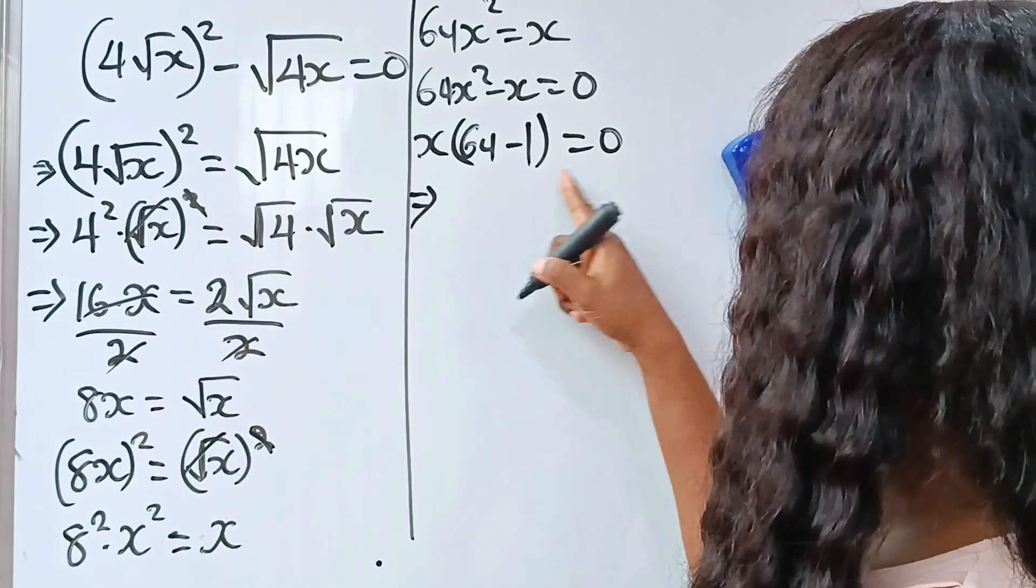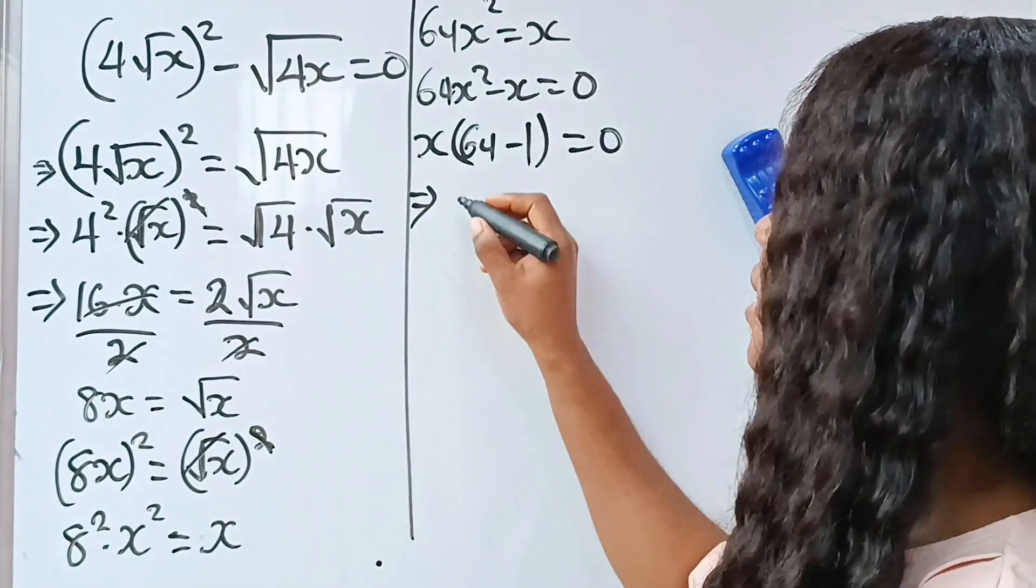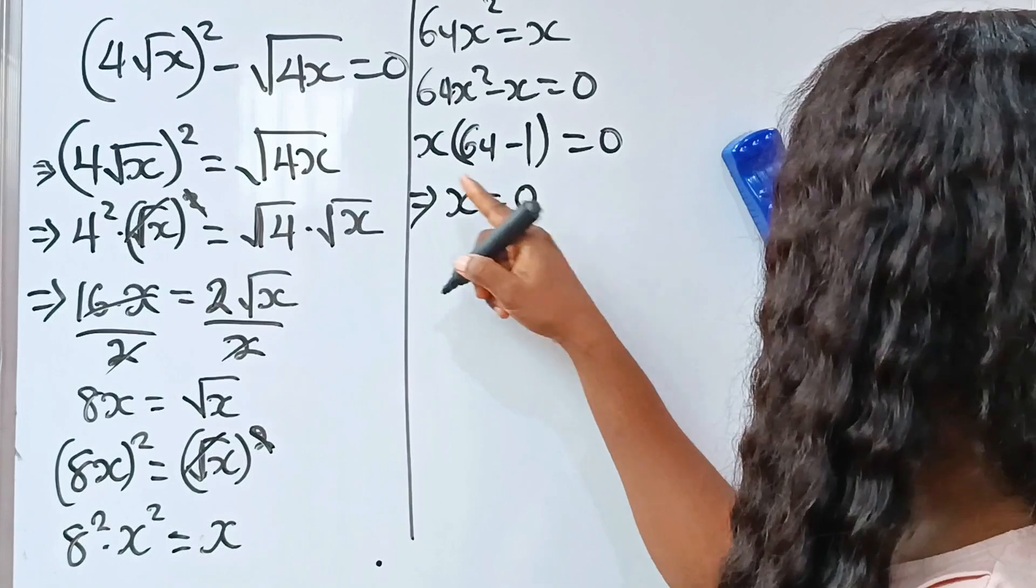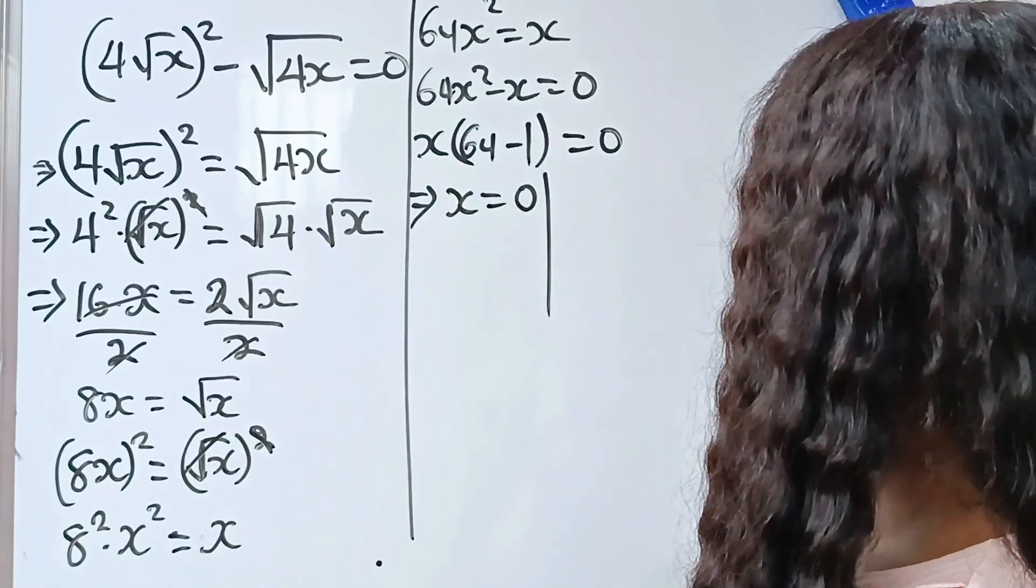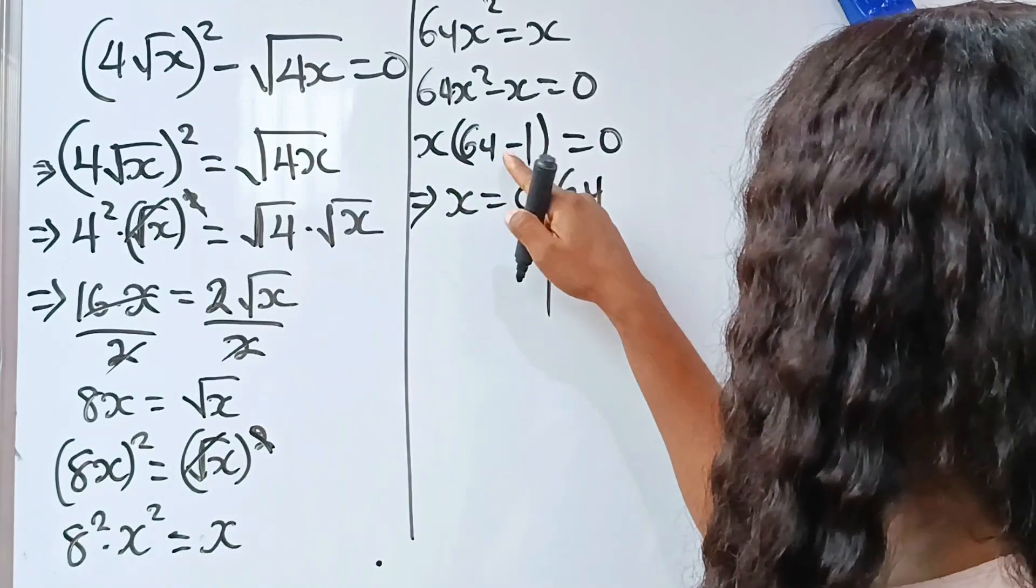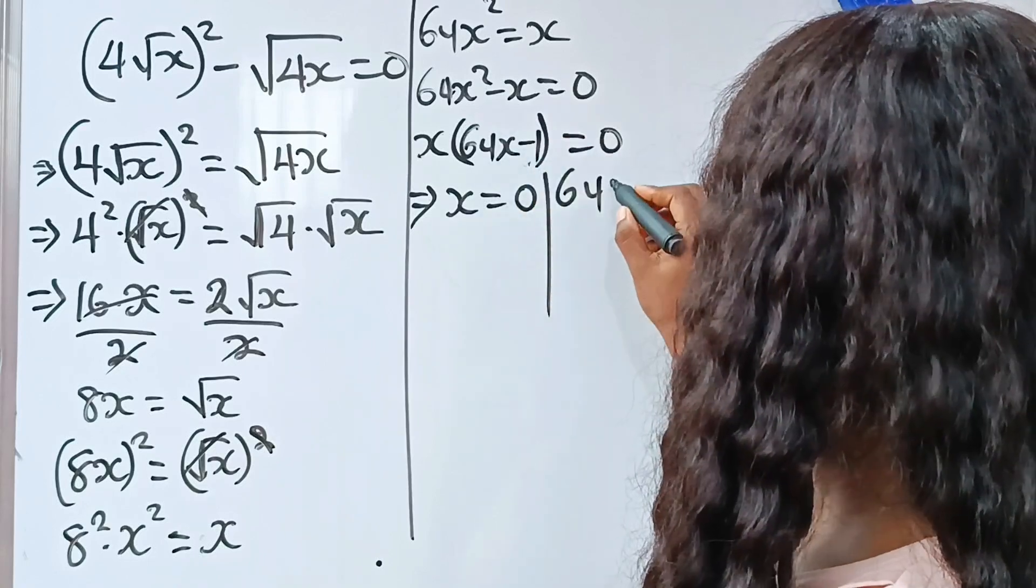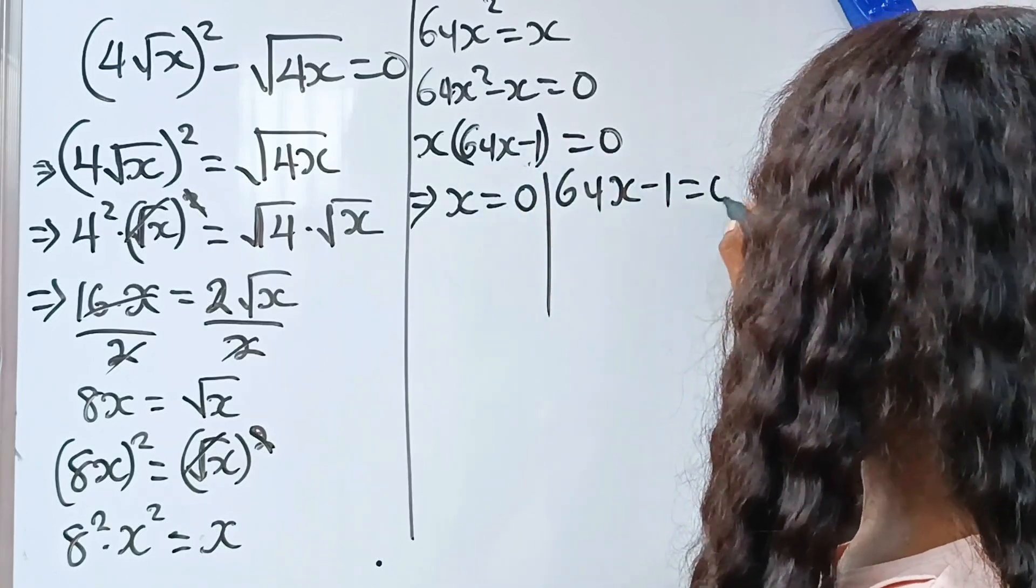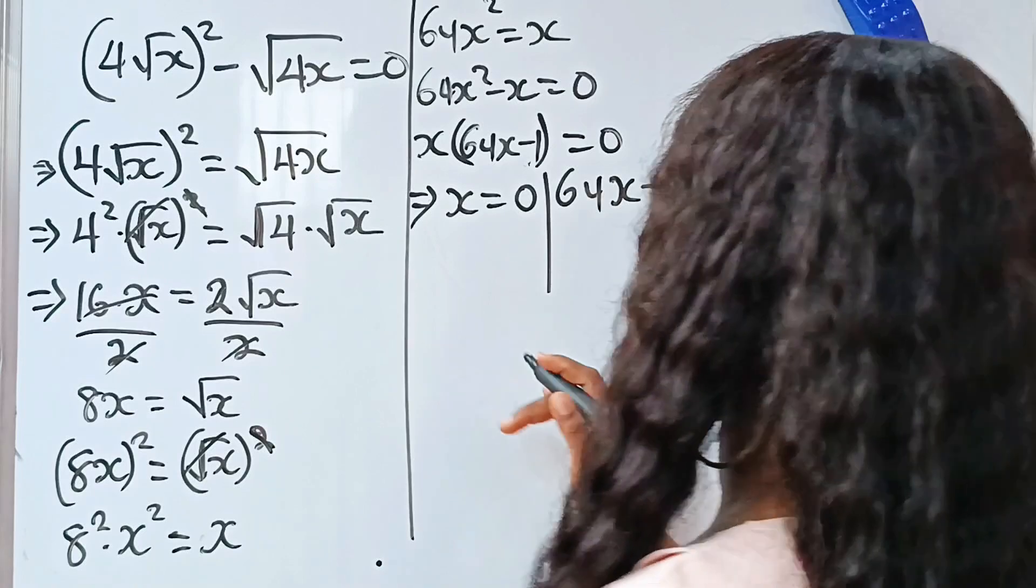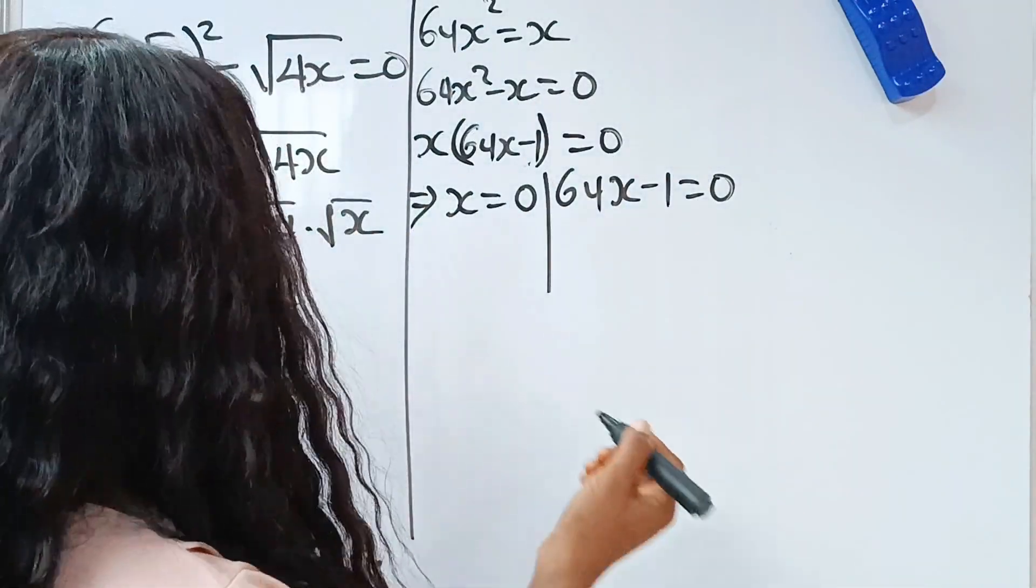Now, we have 2 equations here. The first one is that x is equal to 0 or this is 64x, 64x minus 1 or 64x minus 1 is equal to 0. So, we go ahead and solve.